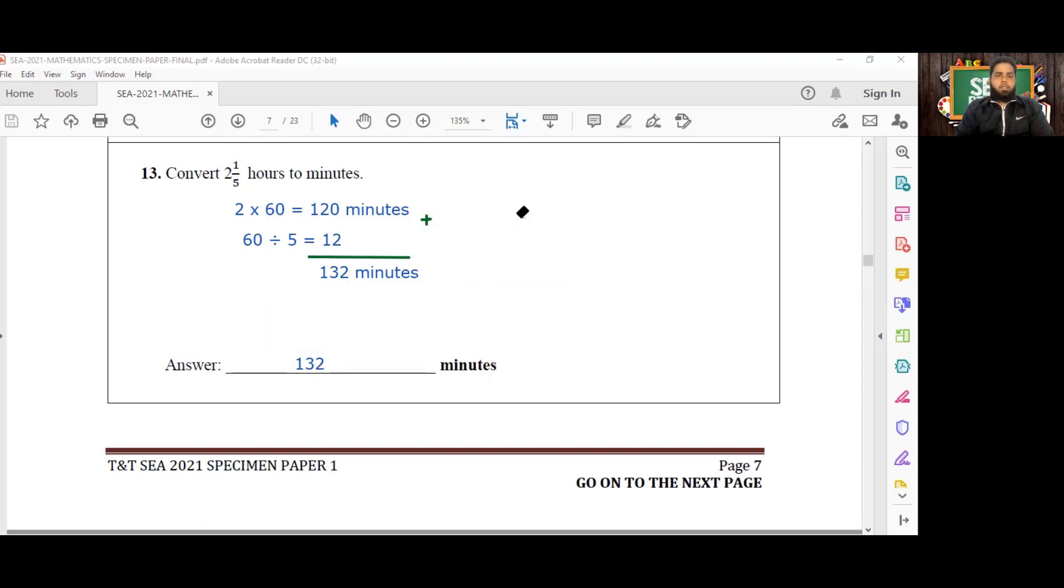132 minutes, so I have a final answer here of 132 minutes. Now if I wanted to tackle this question like a fractions question strictly speaking, then what I would do is convert two and one-fifth hours into an improper fraction. So I'd multiply the whole number by the denominator: 2 multiplied by 5 is 10, and then add that 10 to the numerator to get 11 over 5.